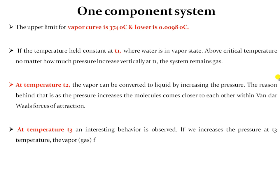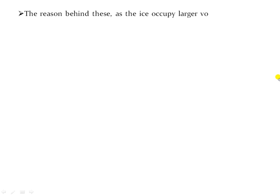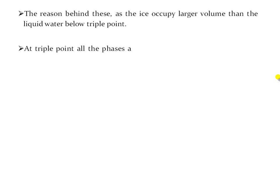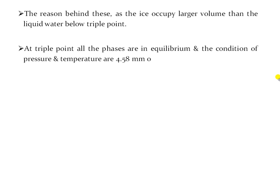An interesting behavior is observed at temperature T3: as we increase pressure, the vapors first get converted into solid form and then convert into the liquid phase. The reason is that ice occupies a larger volume than liquid water below the triple point. At the triple point, all phases are in equilibrium at conditions of 4.58 mm of Hg pressure and 0.0098 degrees centigrade.